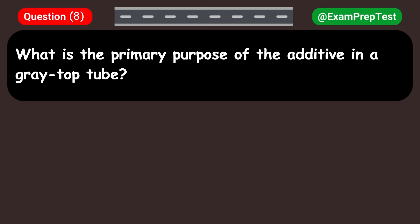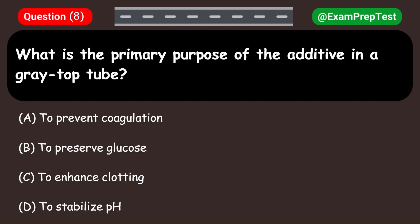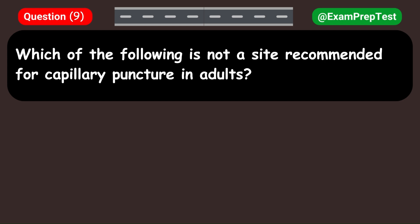What is the primary purpose of the additive in a gray top tube? A. To prevent coagulation. B. To preserve glucose. C. To enhance clotting. D. To stabilize pH. Answer: B. To preserve glucose.